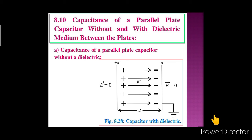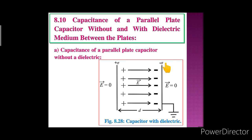When plus Q charge is given to the insulated plate, minus Q charge is induced on the inner face of the earthed plate and plus Q charge is induced on its outer face. Since the outer face is earthed, the plus Q charge flows to the earth. In the outer region, the electric fields due to the two charged plates cancel out, so the net field is zero.